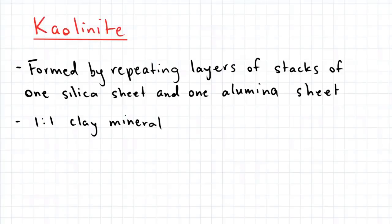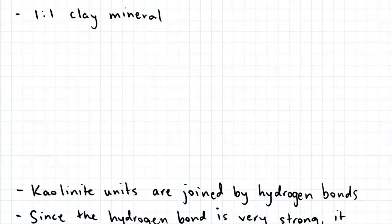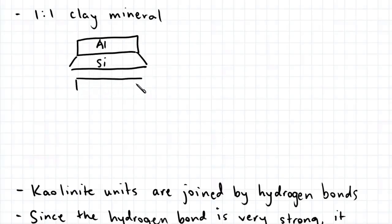Schematically this is what kaolinite looks like. So we have an alumina sheet being bonded to a silica sheet, and this pattern essentially repeats.